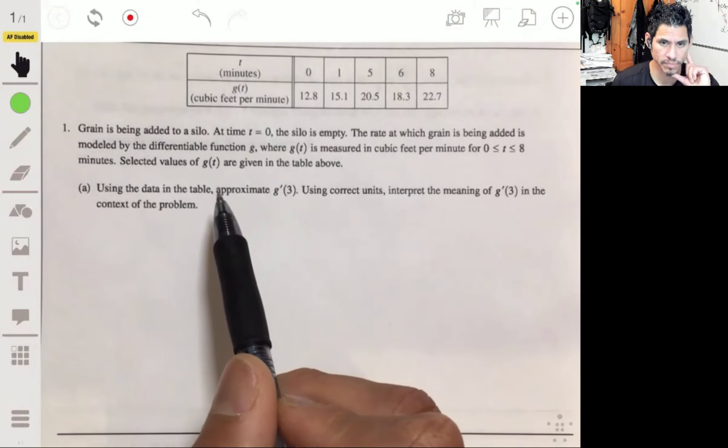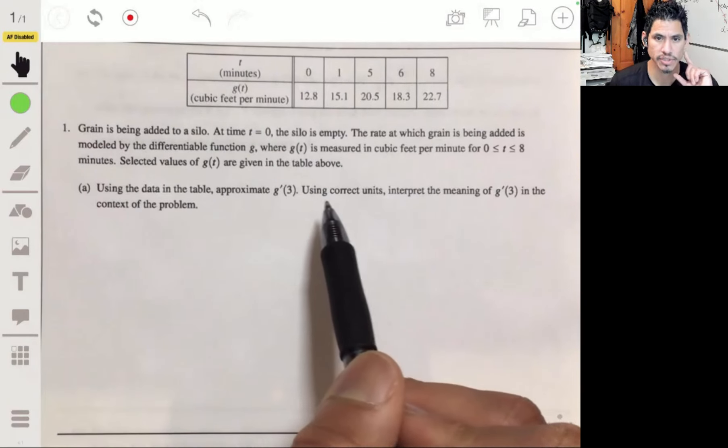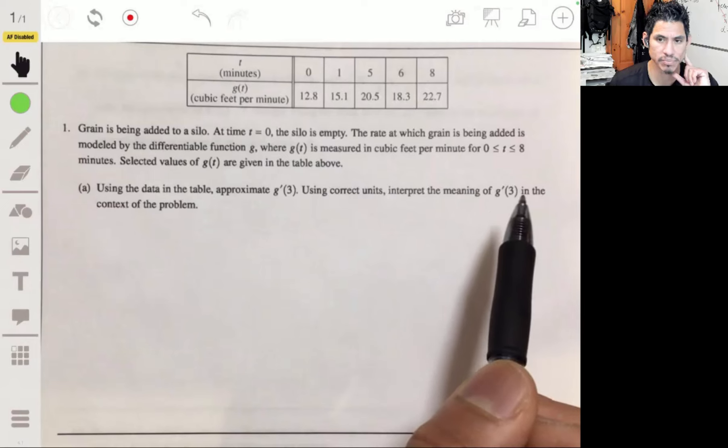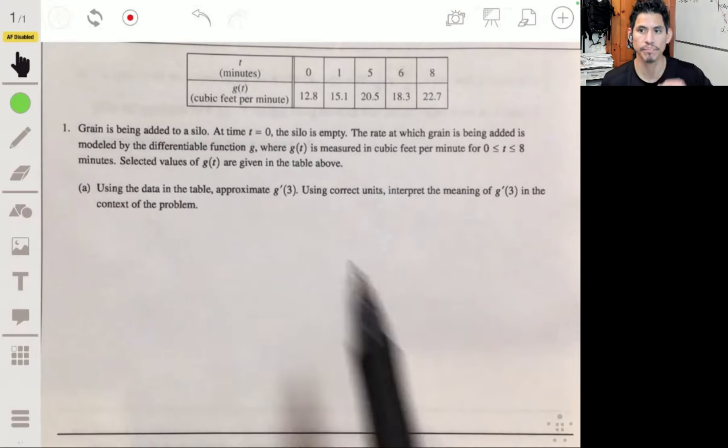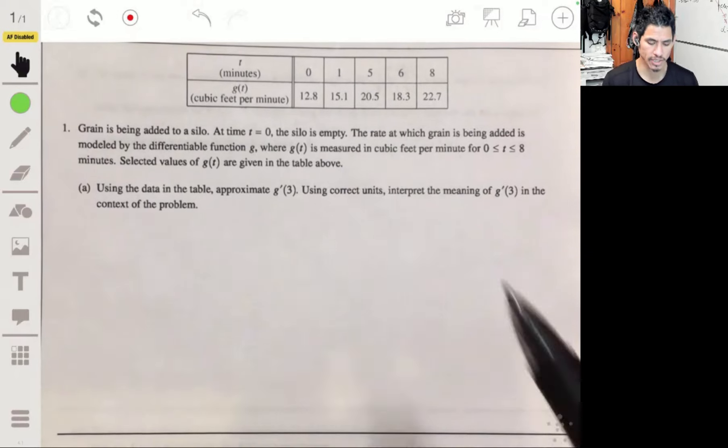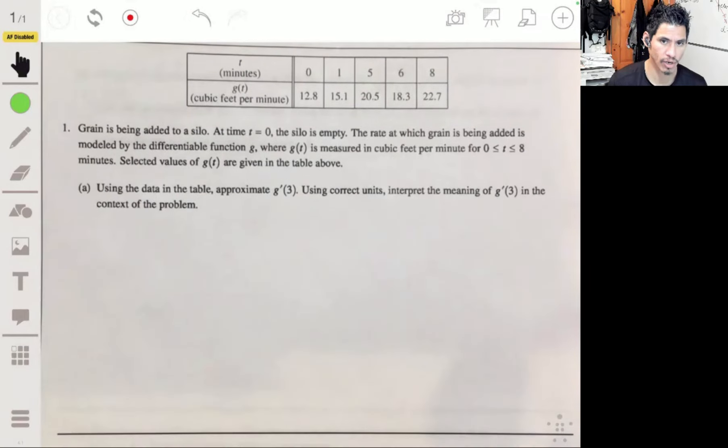So part A, it says approximate g prime of three using correct units, interpret the meaning of g prime of three in the context of the problem. All right, so let's remember that this is a calculator allowed problem. So make sure you always try to look where you can save your time and save tedious calculations because they're really not looking for tedious calculations. They're looking for conceptual understanding. So have your calculator always handy so that you can use it and save time.